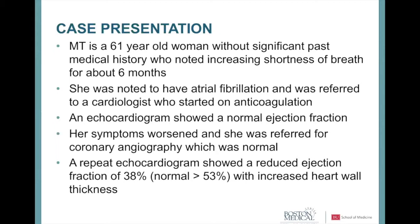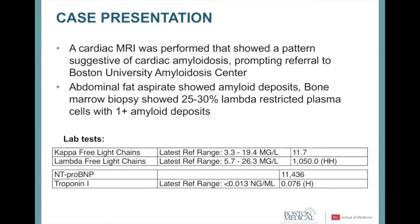Her symptoms got worse, so she was referred for a coronary angiogram, which was completely normal. Because she wasn't improving, the doctor repeated the echocardiogram — and her ejection fraction had now dropped to 38%, meaning only 38% of blood entering the heart was being squeezed out. Normally it's about 53% in women. They also recognized her heart muscle was thickened, which is abnormal. The most common cause of thickening is high blood pressure, but she had none.